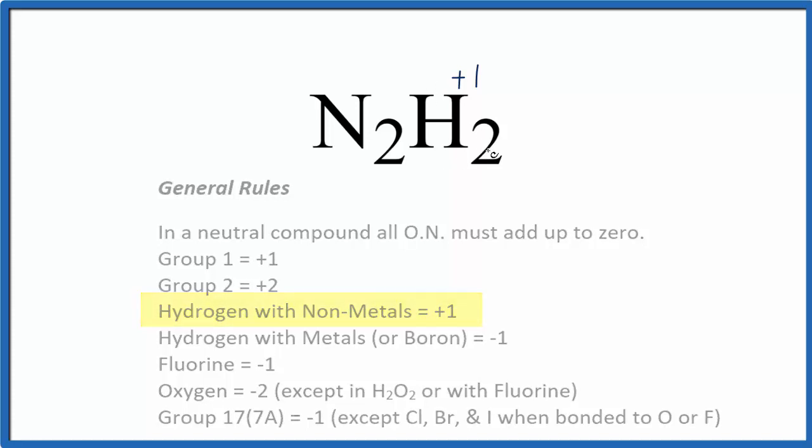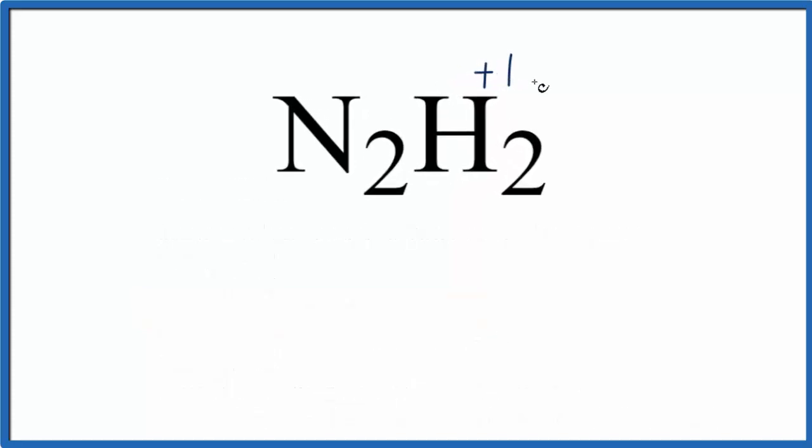So we have two hydrogens, two times plus one, that's plus two. So the oxidation number, the total here, is going to need to be minus two. That means each nitrogen is going to have to have an oxidation number of minus one.